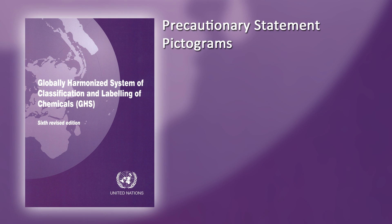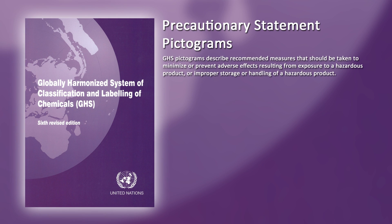Precautionary statement pictograms. GHS pictograms describe recommended measures that should be taken to minimize or prevent adverse effects resulting from exposure to a hazardous product, or improper storage or handling of a hazardous product. Product identifier means the name or number used for a hazardous product on a label or in the SDS. It provides a unique means by which the product user can identify the substance or mixture within the particular use setting — for example, transport, consumer or workplace.